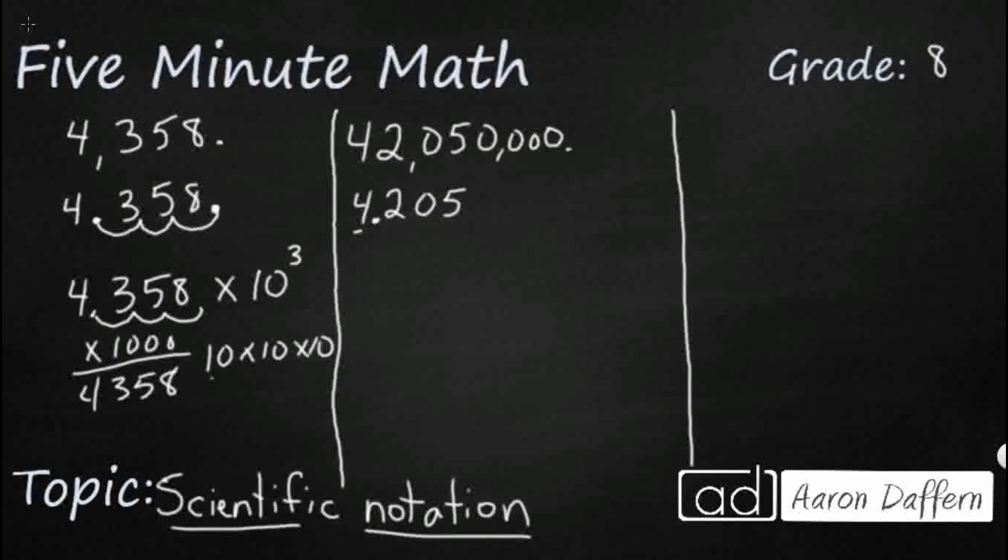I'm going to try to get from 4.205 all the way over to this 42 million. So watch, what I would need to do here is I would need to go over once, twice, three times just to at least get to the zero and the five right there.